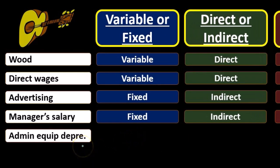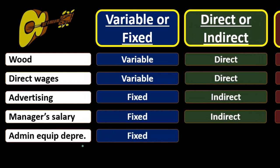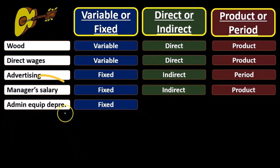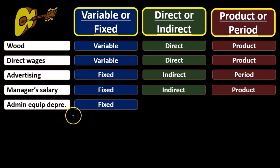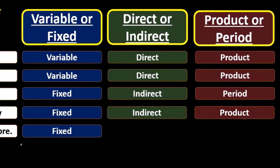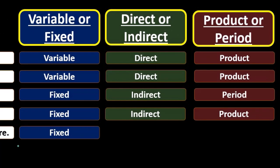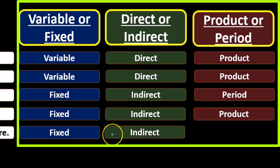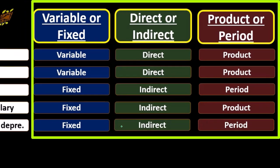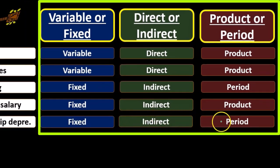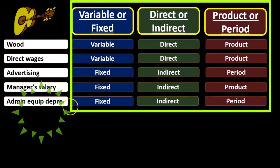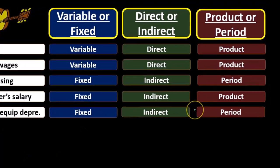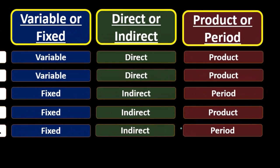For admin equipment depreciation — the depreciation on equipment in the administrative office, like fax machines or copy machines — we're going to say it's fixed, because depreciation is a known set amount. It's going to be indirect or not applicable, because it's not in the production warehouse — it's not going toward the making of the product. And then it's going to be a period cost, because it's in the administrative office and therefore not part of production.